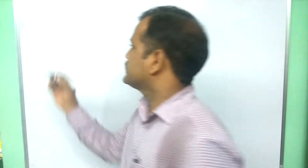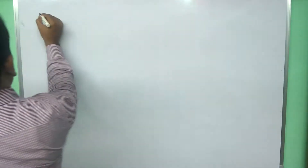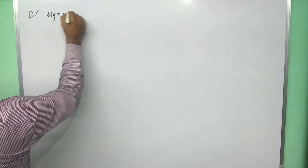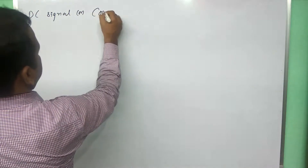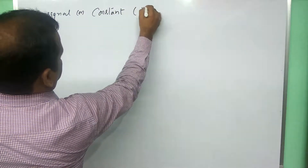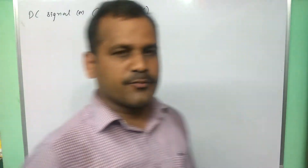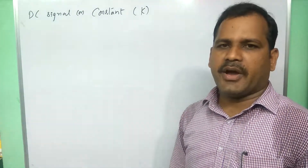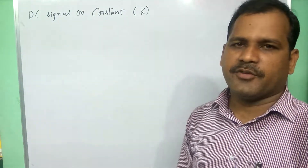Good morning students. In this video, let us find the Fourier transform of a constant or a DC signal. The DC signal or constant, let us take K. To find the Fourier transform of this DC signal, we need to remember the duality property of the Fourier transform.